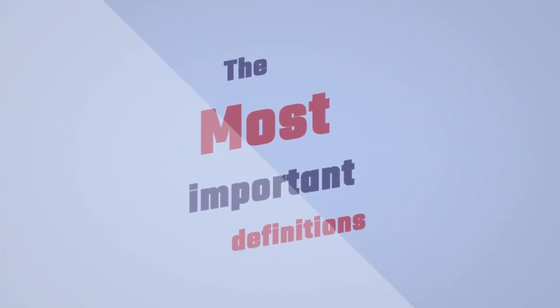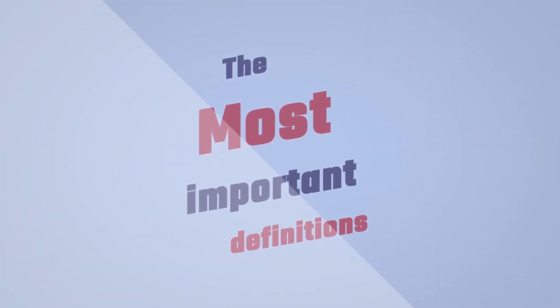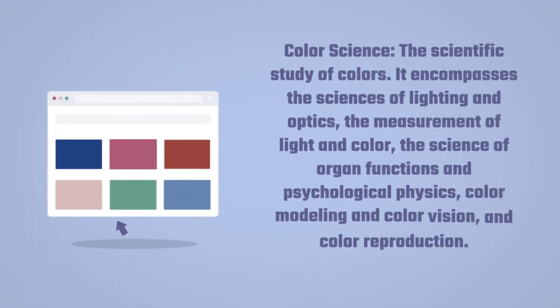The most important definitions. Color science: the scientific study of colors. It encompasses the sciences of lighting and optics, the measurement of light and color, the science of organ functions and psychological physics, color modeling and color vision, and color reproduction.